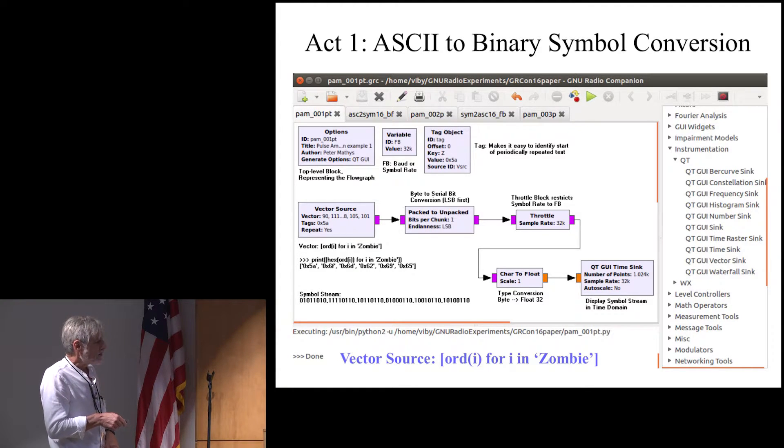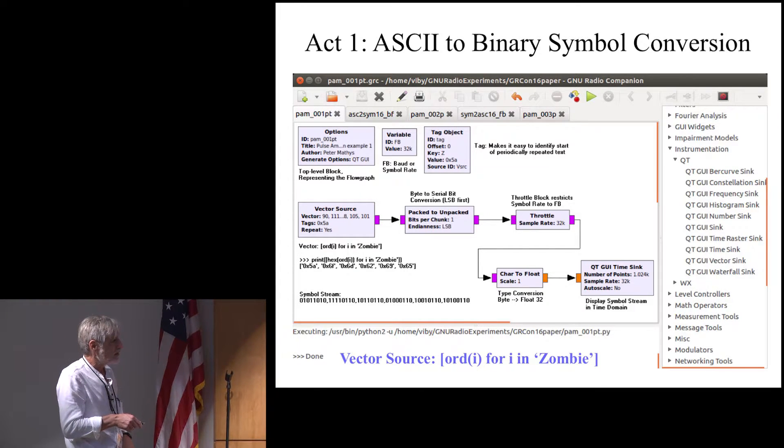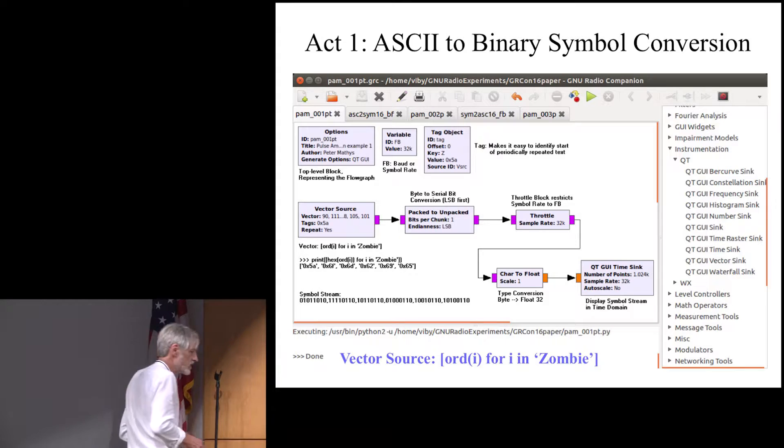And then we want to see at the output what we actually created. So we use a QT GUI time sink that's basically an oscilloscope. And this only can accept either real numbers or complex numbers at the input, floating point numbers essentially. And since we are putting out bits here, we have to do a conversion from those bits to the real numbers so that we can actually see that.